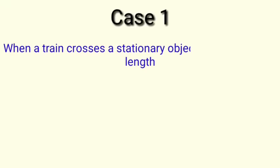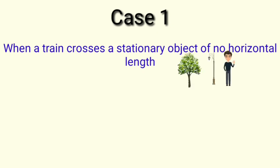In case 1, a train crosses a stationary object which has no horizontal length. It can be a tree, a lamp, a post, a pole, or a man — anything which has a vertical length but doesn't have any horizontal length. In that case, what will be the distance covered? What value do we substitute in place of distance?